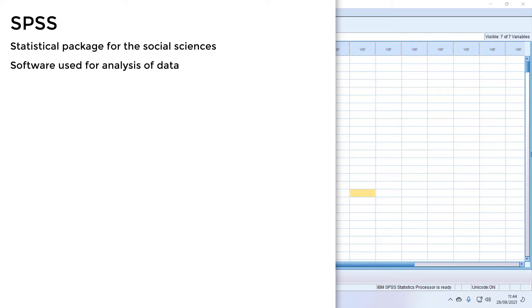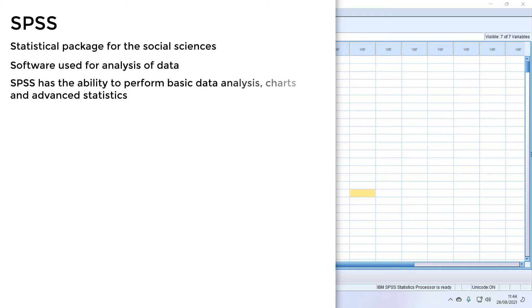SPSS has the capability of analyzing data using basic statistics all the way to advanced statistics. For example, you can use SPSS to calculate averages, do frequencies, create charts, and also perform advanced statistics such as chi-squares, correlations, mean comparisons, regressions, and even structural equation modeling.